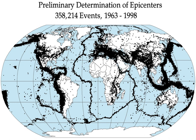Earthquakes are caused mostly by rupture of geological faults, but also by other events such as volcanic activity, landslides, mine blasts, and nuclear tests. An earthquake's point of initial rupture is called its focus or hypocenter. The epicenter is the point at ground level directly above the hypocenter.